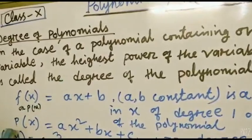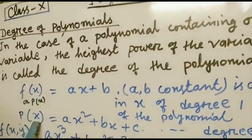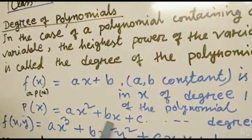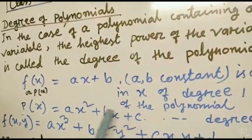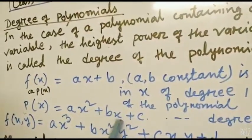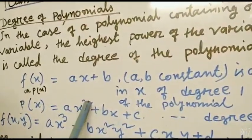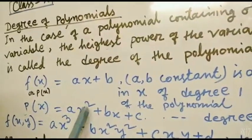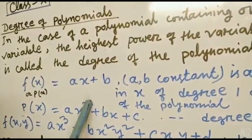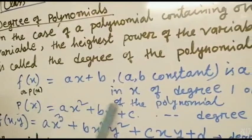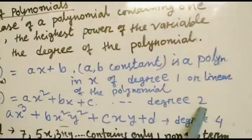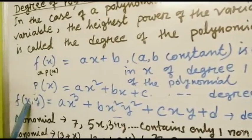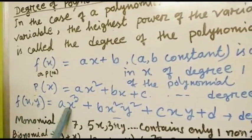Again, suppose p(x) = ax² + bx + c. Now what is the highest power of x? It is x². So the degree is 2.